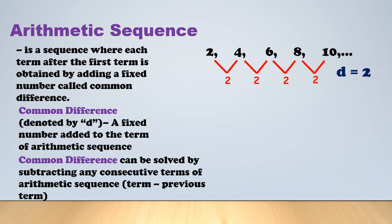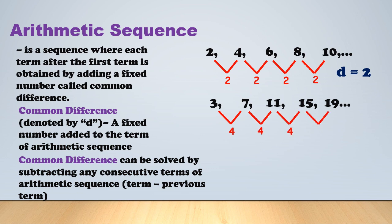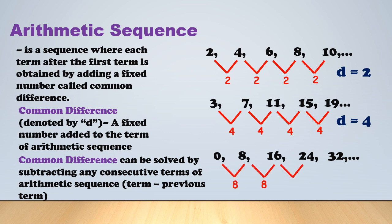Let's try another example: 3, 7, 11, 15, 19. Subtracting: 7 minus 3 is 4, 11 minus 7 is 4, 15 minus 11 is 4, 19 minus 15 is also 4. So D = 4. Next: 0, 8, 16, 24, 32 — subtracting any consecutive terms gives 8, so the common difference is 8. If a sequence has a common difference, it is automatically an arithmetic sequence.